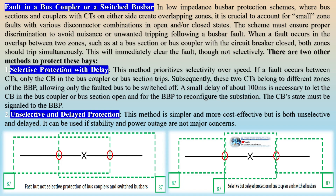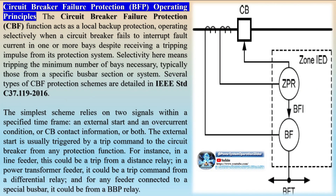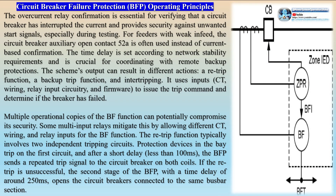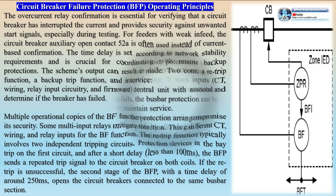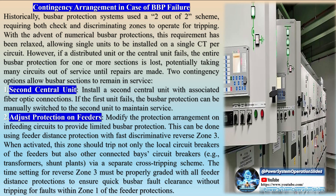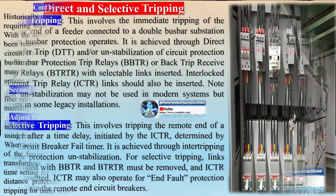Busbar protection systems protect substation busbars and associated equipment from the consequences of short circuits and earth faults. In the early days of power system development, no separate protection device was used for busbar protection — remote end line protections served as the main protection for busbar faults. As network short-circuit capacity increased, dedicated differential relays for busbar protections were applied to minimize tripping time and limit damage from high fault currents. Today, busbar protection systems are standard, and even double busbar protections may be applied. Key design issues including reliability, operability, maintainability, and cost must be addressed when selecting a busbar configuration and protection scheme.